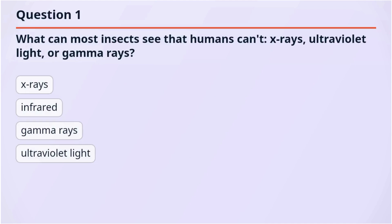Question 1. What can most insects see that humans can't? X-rays, ultraviolet light, or gamma rays.